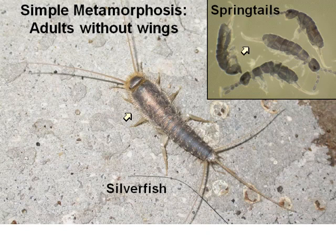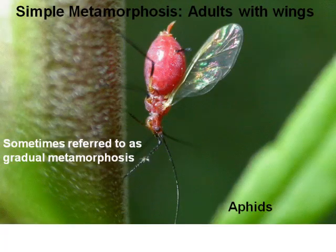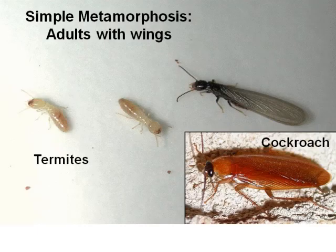Here we have a typical springtail that does have a spring on the rear end and would jump around similarly to a flea. However, especially this time of year with cool weather, we get springtails that don't have the spring — they're more blue in color and often associated with water. We also have simple metamorphosis where adults do have wings — aphids are a good example. The adult has wings, but the body before the wings looks fairly similar to what wingless aphids look like.